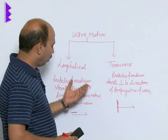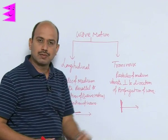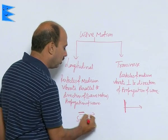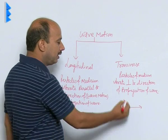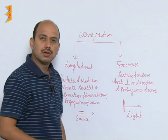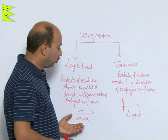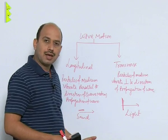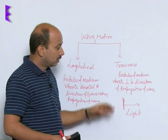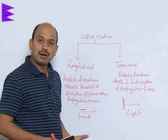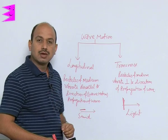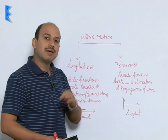There are two types of wave motion: longitudinal and transverse. Sound is an example of longitudinal wave motion, and light is an example of transverse wave motion — the two most common forms of energy. For vibrations of the particle, the medium must be elastic.